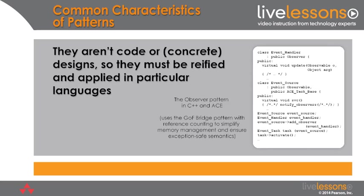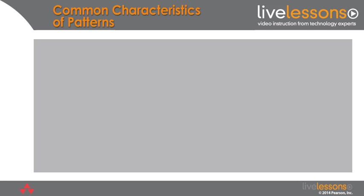Here's another example of applying the observer pattern, except this time using C++ with something called ACE. Same pattern, different realization, and there are different variations as well. For example, this particular use of the pattern combines observer with another Gang of Four pattern called the bridge pattern, which is very useful in C++ to abstract away from memory management concerns, since C++ doesn't have the benefit of garbage collection like Java does.